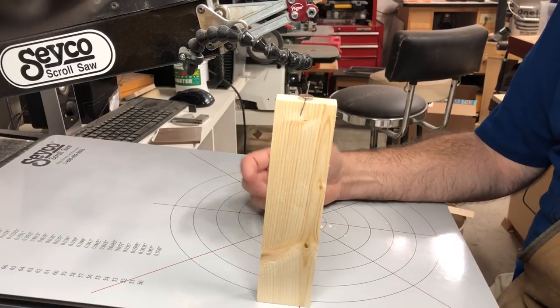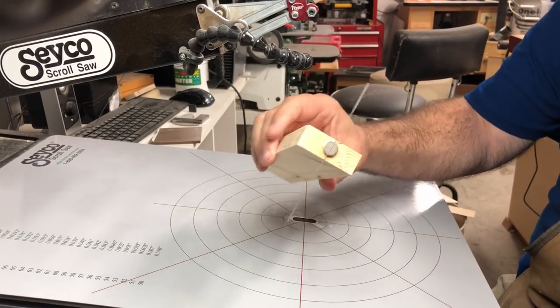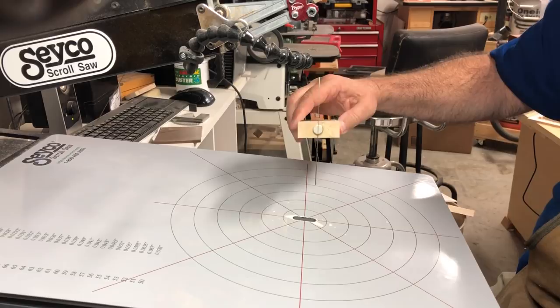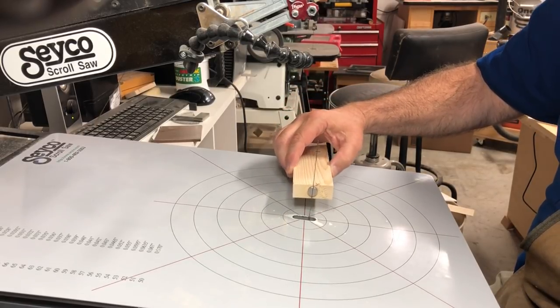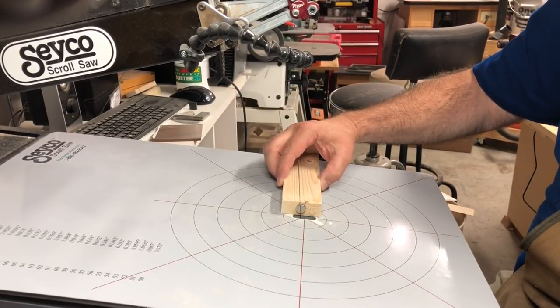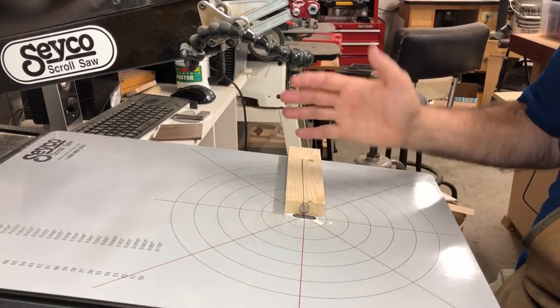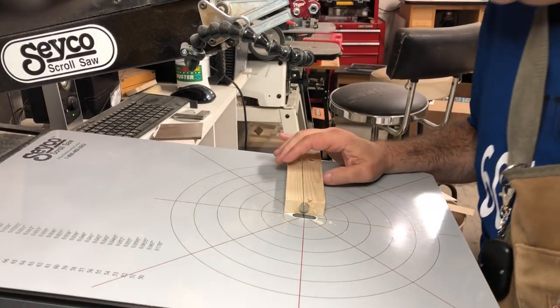So what you do is you take this blade on the rare earth magnet, and one-handed you can place it down through the hole in the scroll saw.